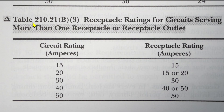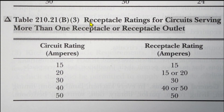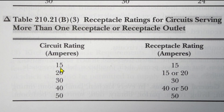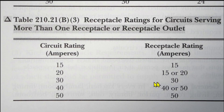Here we are at Table 210.21(b)(3) — with a delta symbol indicating a 2023 change. This covers receptacle ratings for circuits serving more than one receptacle or receptacle outlet. The table shows: a 15 amp circuit rating must have a 15 amp receptacle rating; a 20 amp circuit rating can have a 15 or 20 amp receptacle rating; 30 amp is 30; 40 amp is 40 or 50; and a 50 amp circuit rating needs a 50 amp receptacle rating.